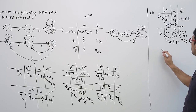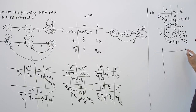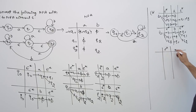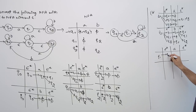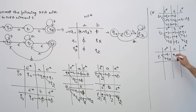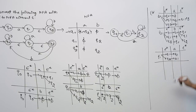For state Q1: epsilon closure of Q1 is {Q1, Q2}. If you are seeing symbol A on Q1, you go to Q1. If you are seeing symbol A on Q2, you go to Q1. Then epsilon closure of Q1 is {Q1, Q2}.